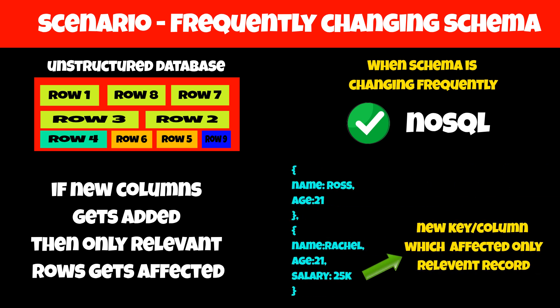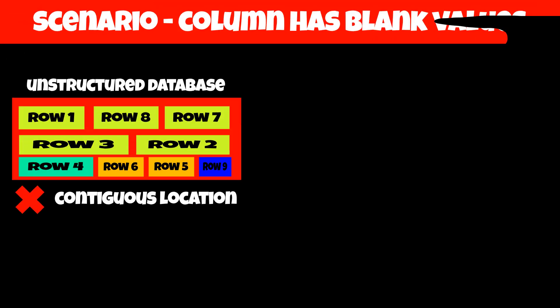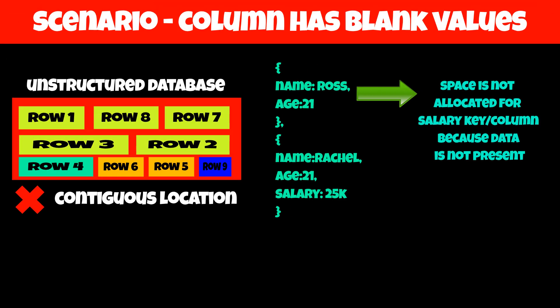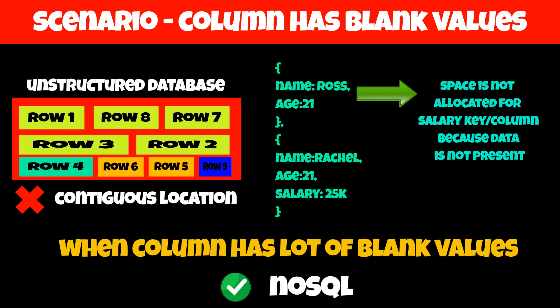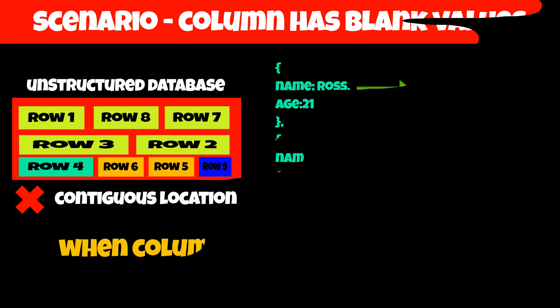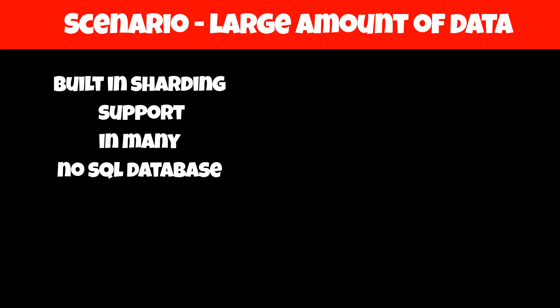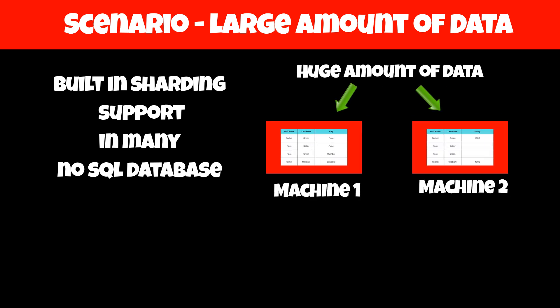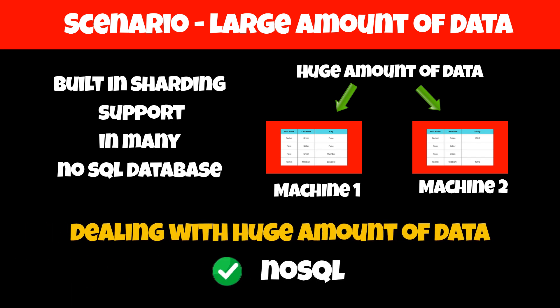NoSQL doesn't store data in contiguous locations, so if a column or key doesn't have a value, it will not allocate space for it. This makes it a good choice for use cases where columns have many blank values. Many NoSQL databases also come with built-in support for sharding, meaning we can store data on multiple machines efficiently. So if you deal with a large amount of data, NoSQL becomes a good choice.